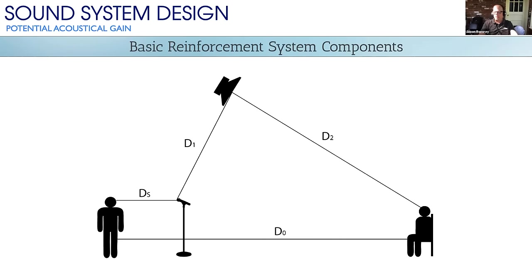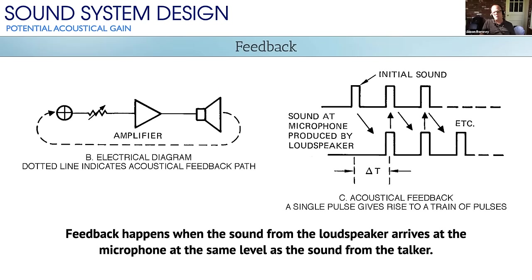Trying to get more gain before feedback is actually a geometry problem more than a frequency problem. I've called out specific distances: D0 is the distance between the talker and the listener; D1 is the distance between the microphone and the loudspeaker; D2 is the distance between the loudspeaker and the listener; and DS is the distance between the talker and the microphone. Now let's look at what actually happens when feedback occurs.